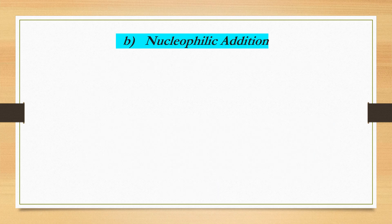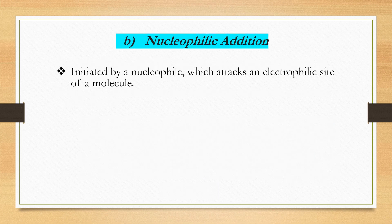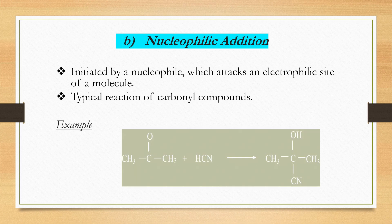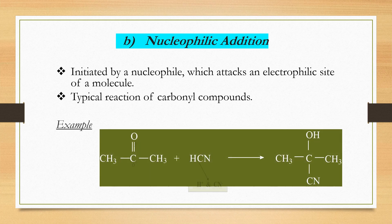For nucleophilic addition, the reaction is initiated by a nucleophile which attacks an electrophilic site of the organic molecule. This is the typical reaction for carbonyl compounds. In this reaction, HCN is used as the reagent, and CN⁻ acts as the nucleophile that attacks the carbon-oxygen double bond (C=O) of the carbonyl compound.